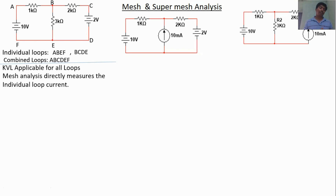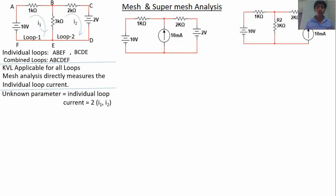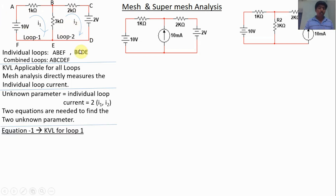Mesh analysis directly measures the individual loop currents. Here the individual loop currents are I1 and I2. Our objective is to find I1 and I2. Since there are two unknown parameters, we need two equations. We can apply KVL for loop 1, loop 2, or the combined loop.